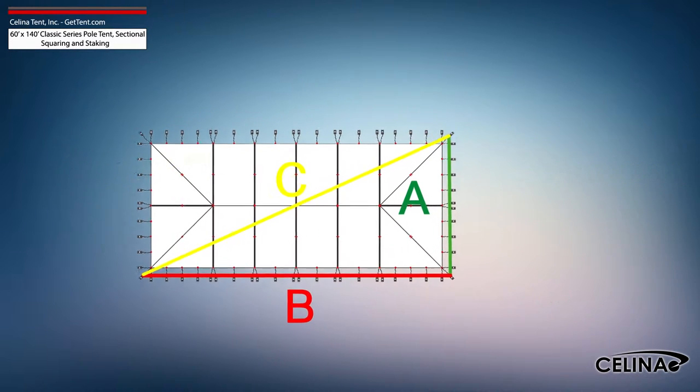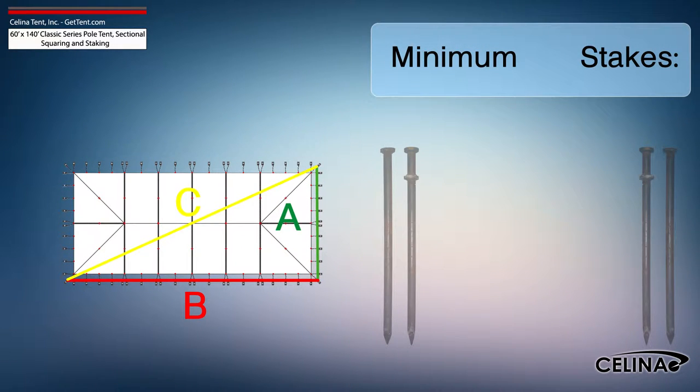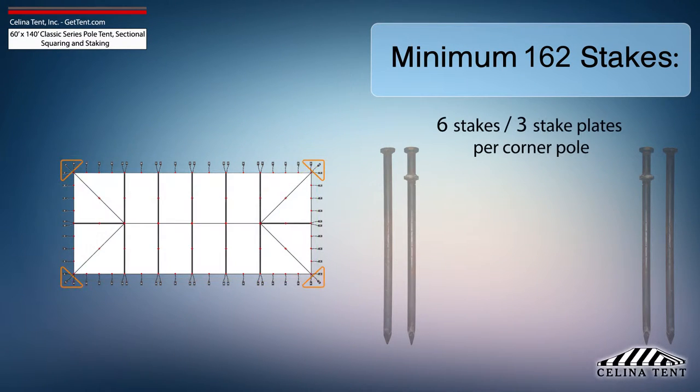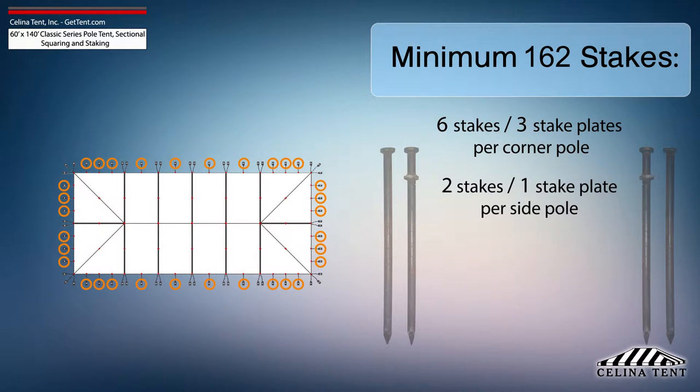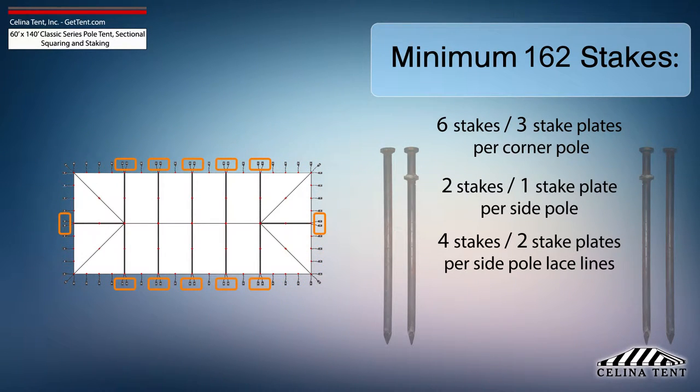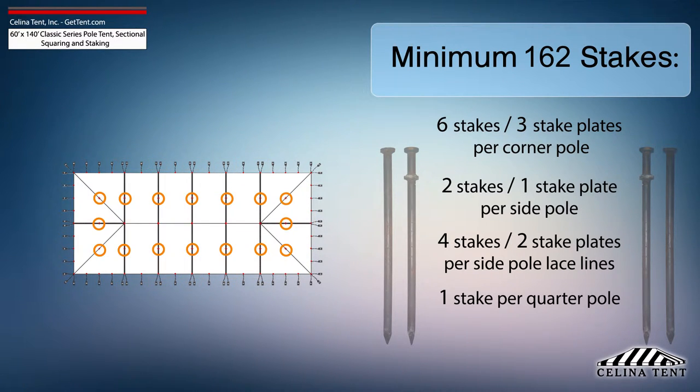Salana recommends that a 60-foot by 140-foot classic series pole tent receives a minimum of 162 stakes: 6 stakes and 3 stake plates for each corner pole, 2 stakes and 1 stake plate for each side pole, 4 stakes and 2 stake plates for each side pole at lace line locations, 1 stake for each quarter pole, and 2 stakes for each center pole.